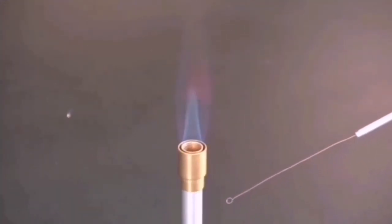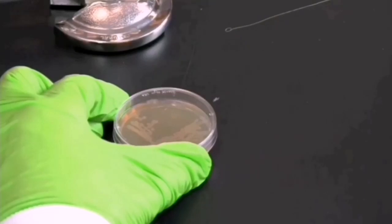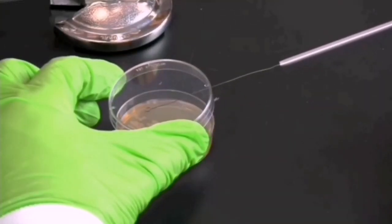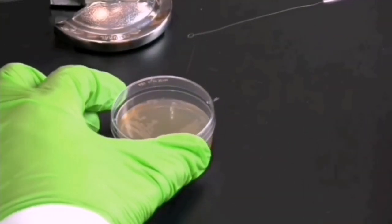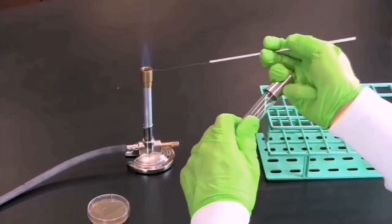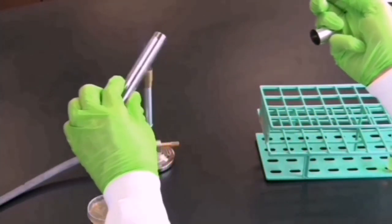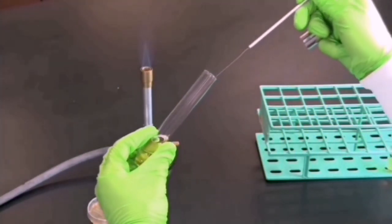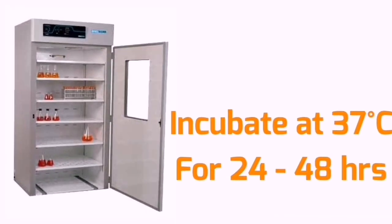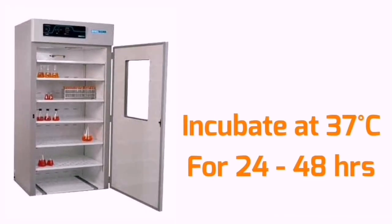Sterilize the loop or use a sterile plastic loop for one use. Take a touch from a fresh culture colony and inoculate it into sterile tryptophan broth or peptone water containing tryptophan. Incubate the culture at 37 degrees Celsius for one to two days.